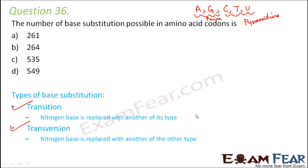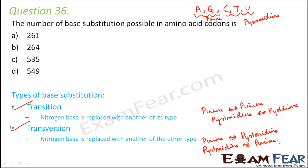In transition, a purine gets replaced with a purine. Similarly, a pyrimidine gets replaced with a pyrimidine. When we talk about the next type of base substitution, transversion, here a nitrogen base is replaced with another of the other type. That means a purine gets replaced with a pyrimidine and vice versa.